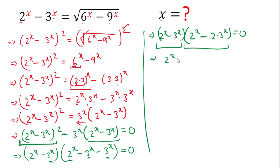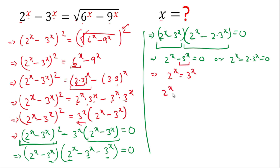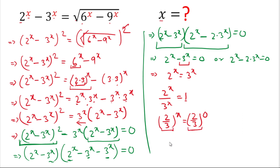Case 1: 2^x minus 3^x equals 0. Moving 3^x to the right gives 2^x equals 3^x. Dividing both sides by 3^x gives (2/3)^x equals 1. Since any base to the power 0 equals 1, we can write (2/3)^0 equals 1, so x equals 0. This is our first solution: x = 0.